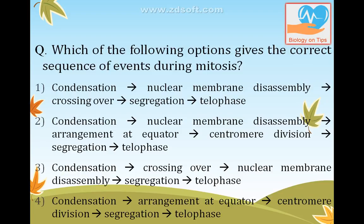Which of the following gives the correct sequence of events during mitosis? First there will be condensation, then nuclear membrane disassembly — the nuclear membrane starts disappearing. Then there is arrangement of chromosomes at the equator, then centromere digression, finally segregation, and then telophase. This is the whole sequence of mitosis.